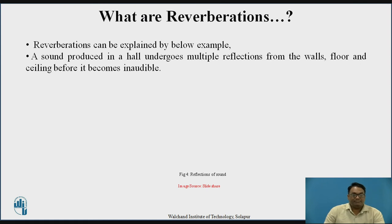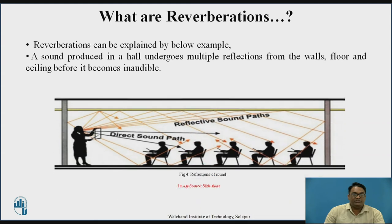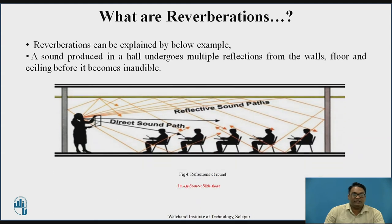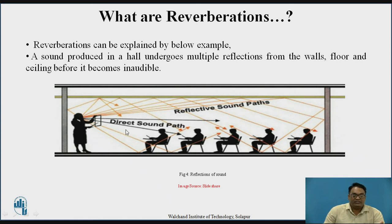Reverberations can be explained with the following example. A sound produced in a hall undergoes multiple reflections from the walls, floors, and ceiling before it becomes audible. When a teacher speaks, the first and second row students hear the sound directly, but students in the third, fourth, and fifth rows hear the teacher's voice through multiple reflections from the flooring, ceiling, and side walls of the classroom.